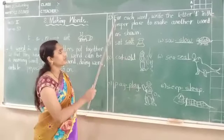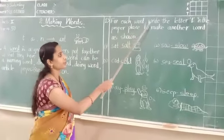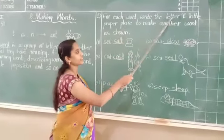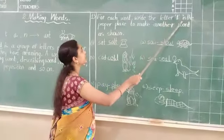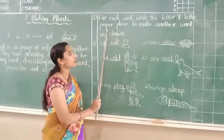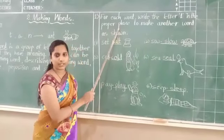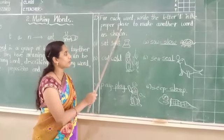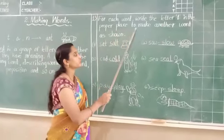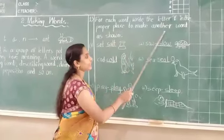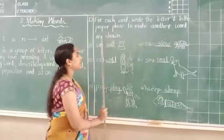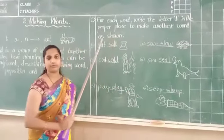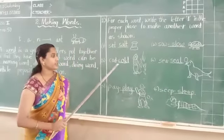Understood? For each word, write the letter L in the proper place. Remember — proper place to make another word as shown. Understood?